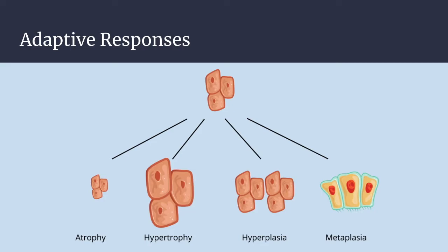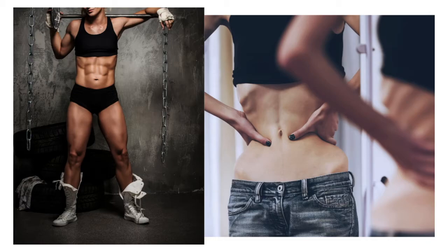Next is atrophy — a reduction in the size of an organ or tissue due to a decrease in cell size or number. This can be physiologic or pathologic and is not always a bad thing. The mechanism involves decreased protein synthesis combined with increased protein degradation through the ubiquitin proteasome pathway. Physiologic atrophy is common during normal fetal development, where ducts and structures recede, or after giving birth when the uterus decreases in size.